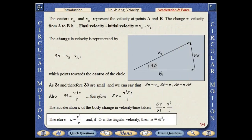The vectors v_a and v_b represent the velocity at points a and b. The change in velocity from a to b is final velocity minus initial velocity, which equals v_b minus v_a.